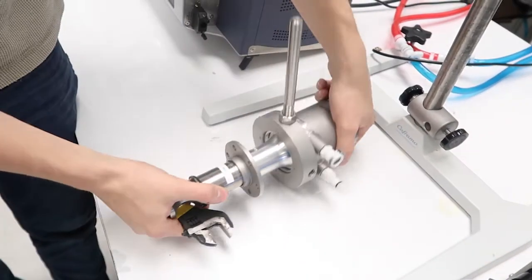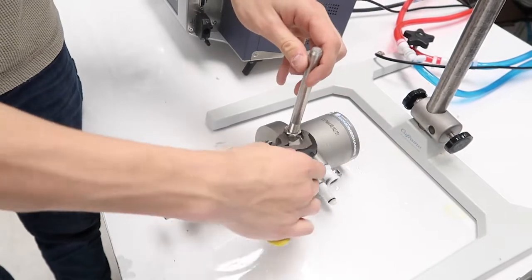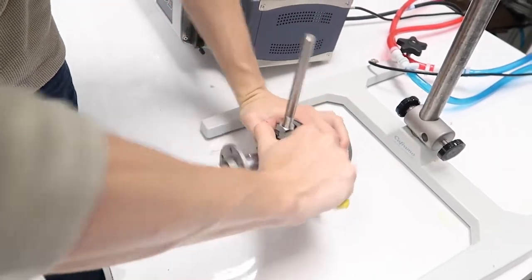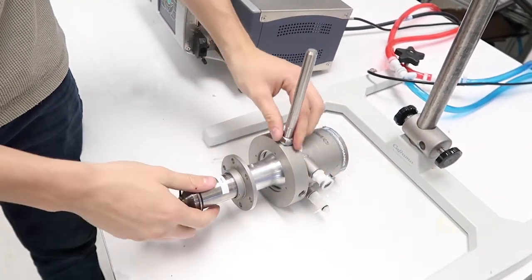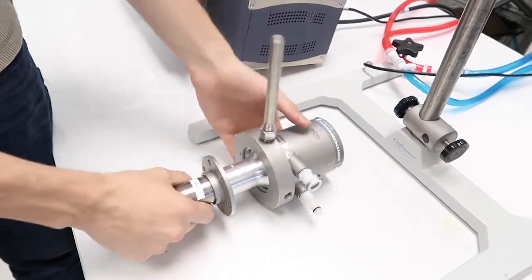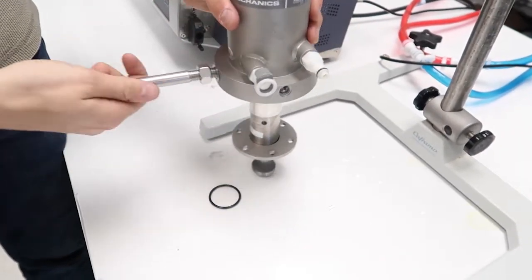Before detaching the horn from the transducer, be sure to remove the transducer support arm. Never rely on the transducer support arm instead of the spanner wrench during this procedure.